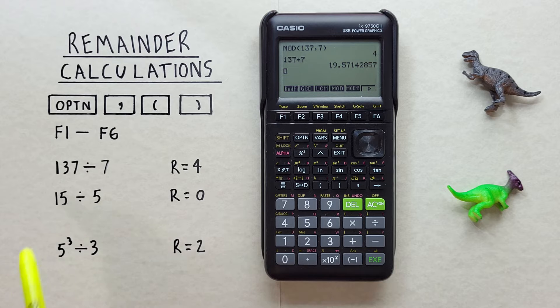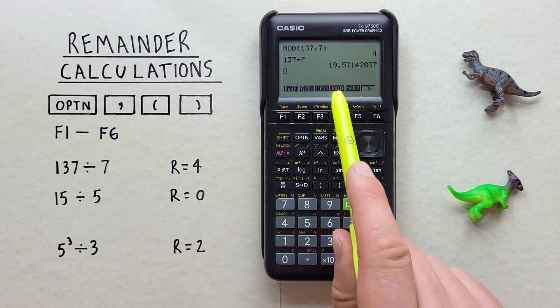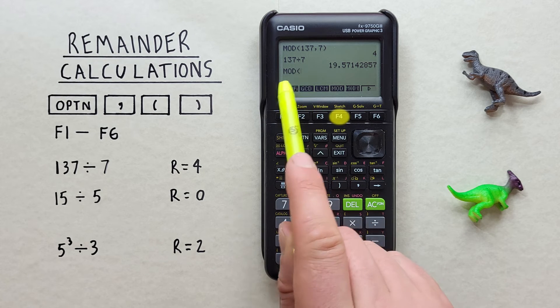What's the remainder of 15 divided by 5? Again, we start with the mod or modulus with the open bracket.